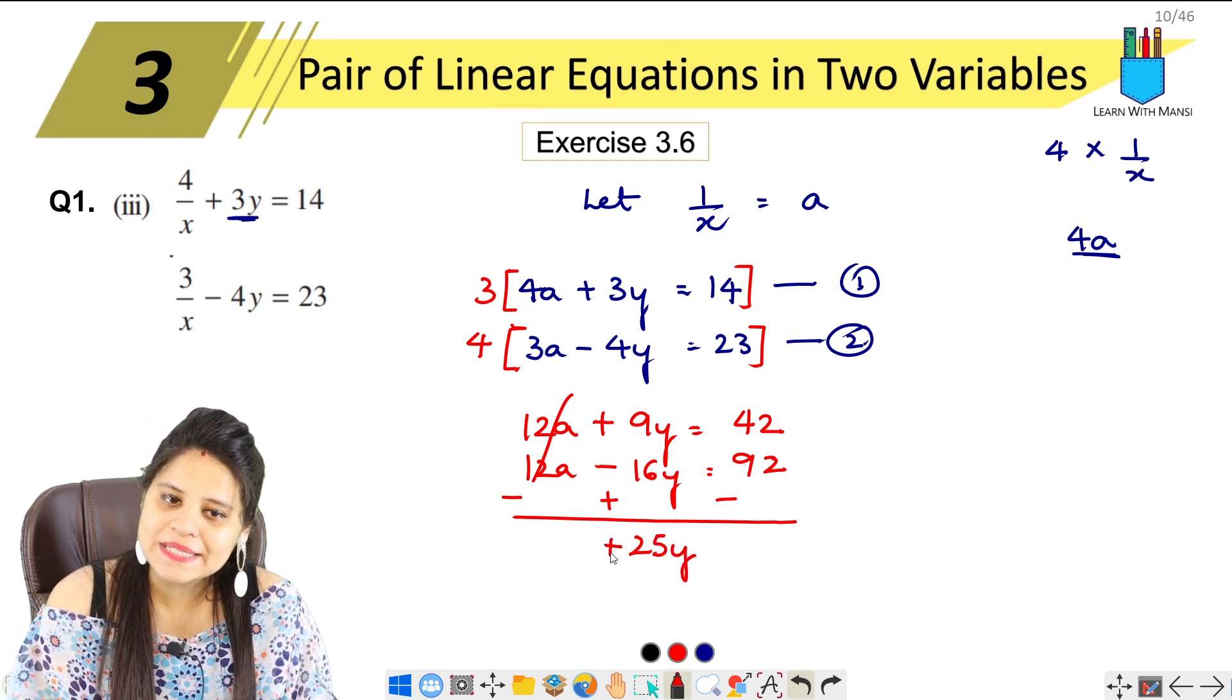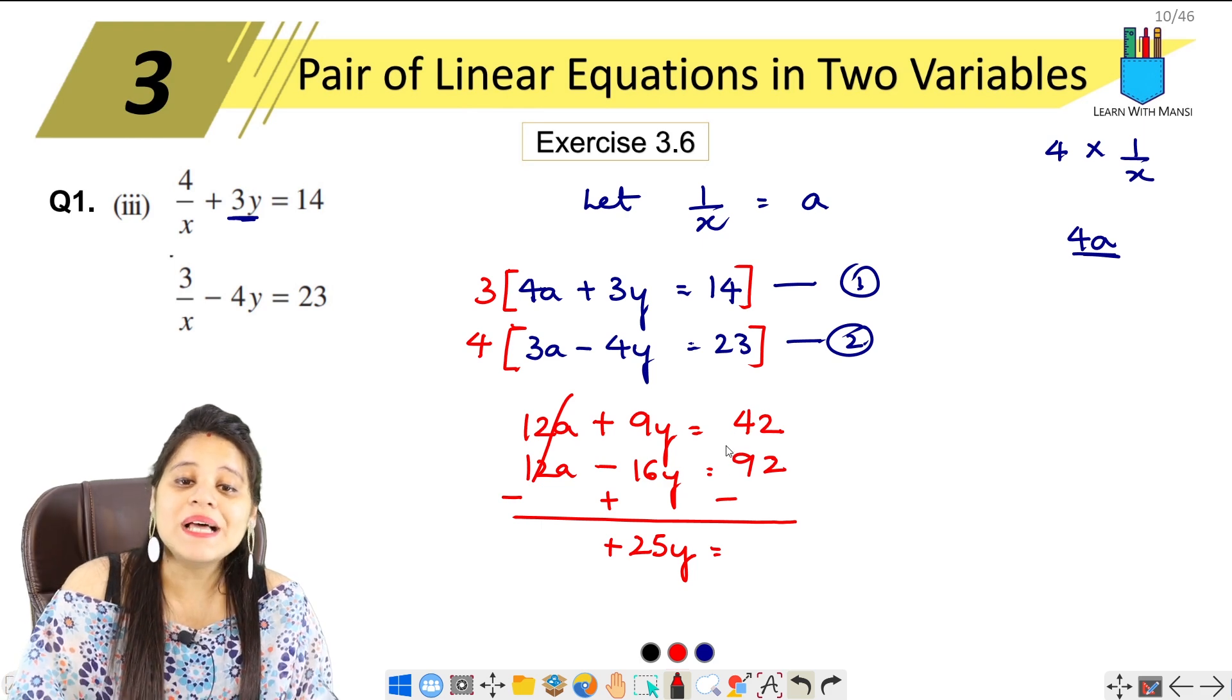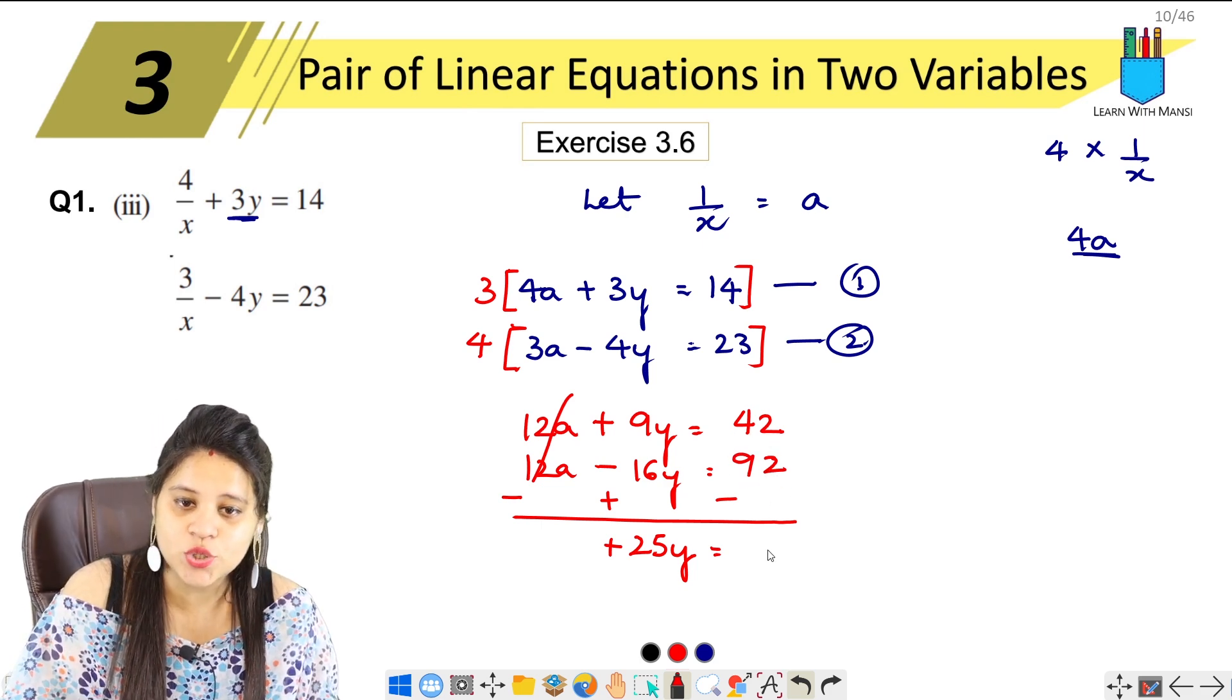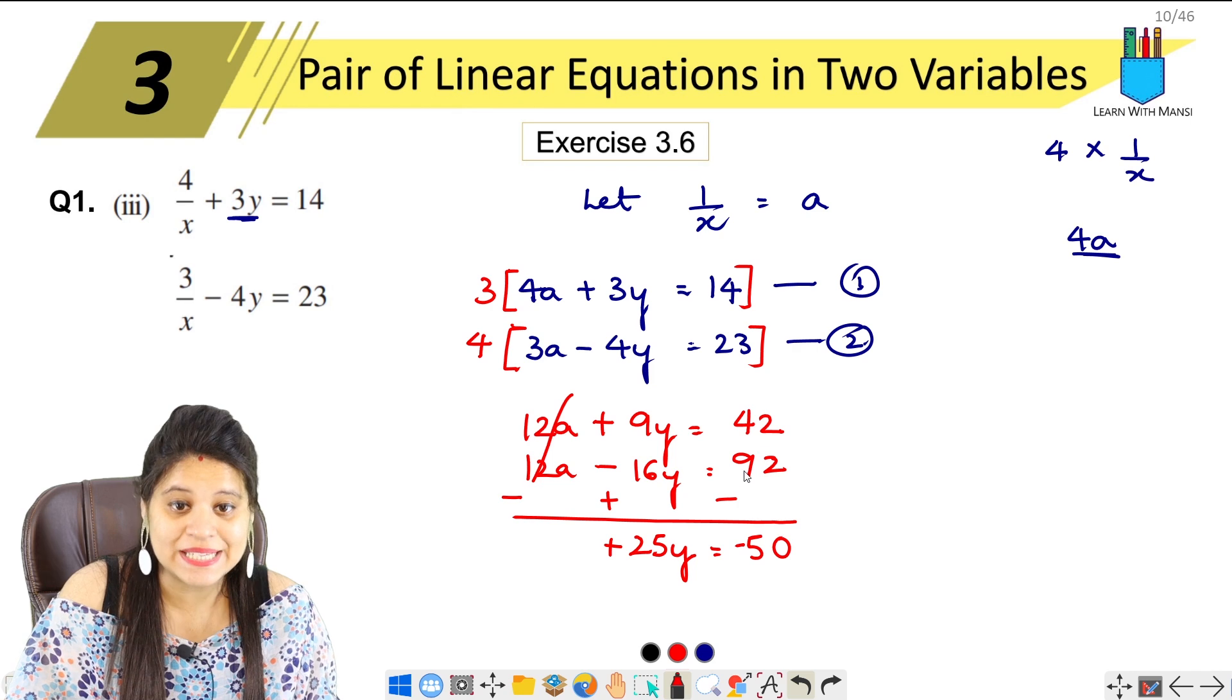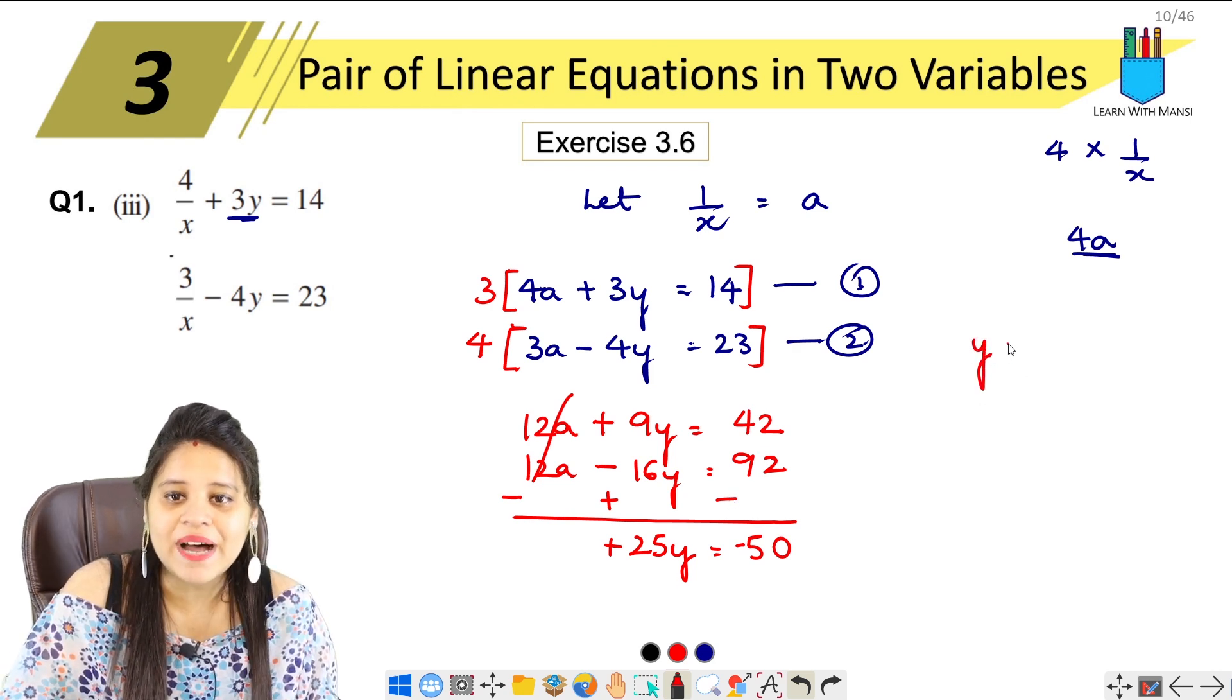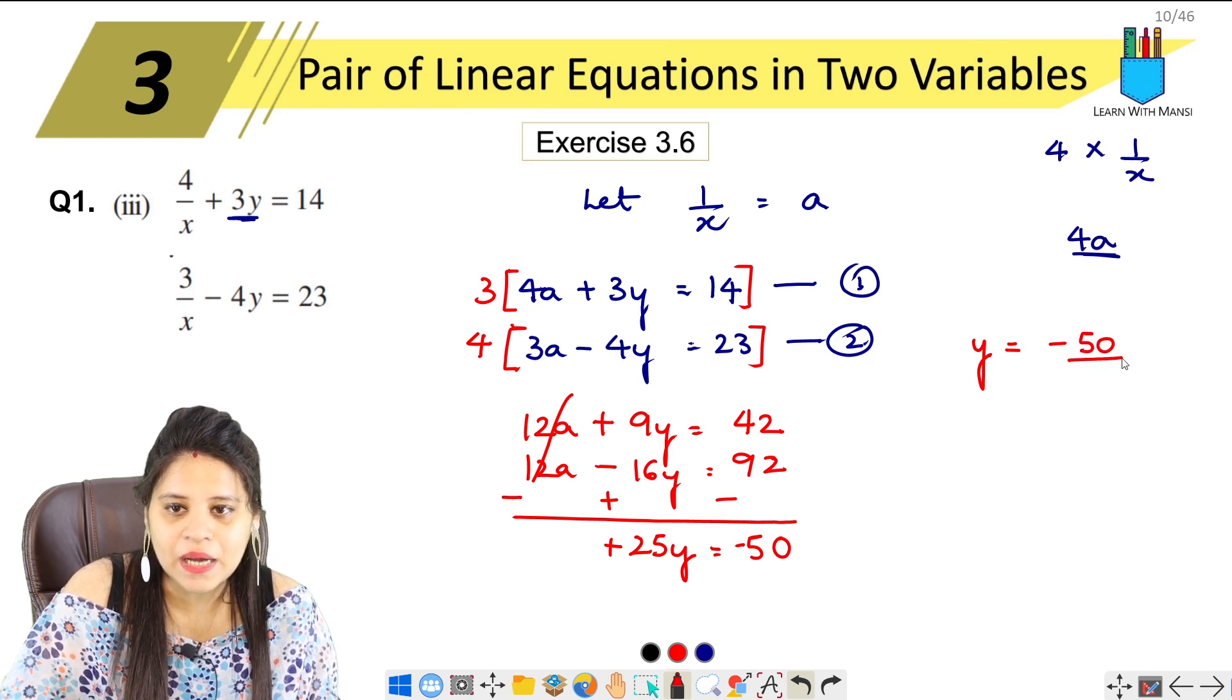25y plus, plus, plus sign. Then plus, minus, minus. 92 minus 42. 2 minus 2 is 0. 9 minus 4 is 5, but we need to subtract with the larger value's sign.